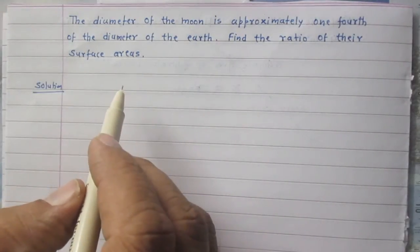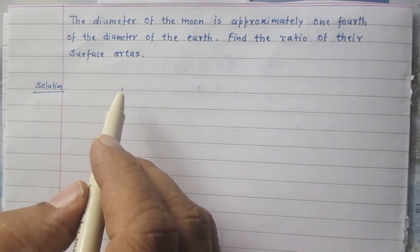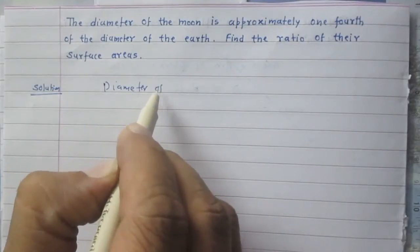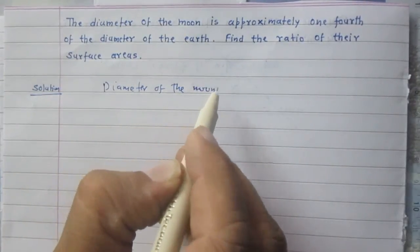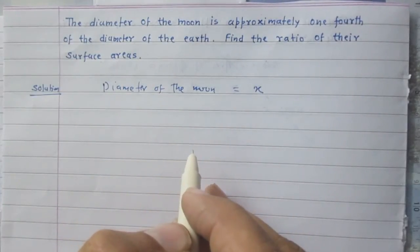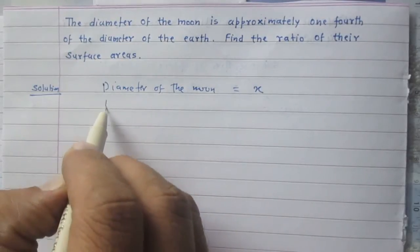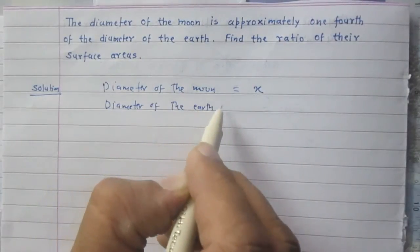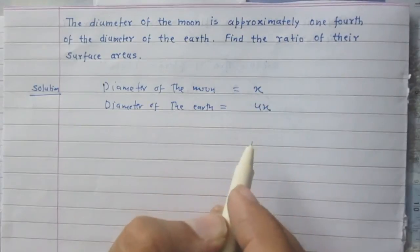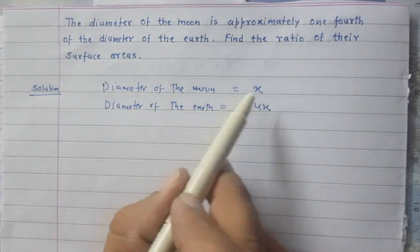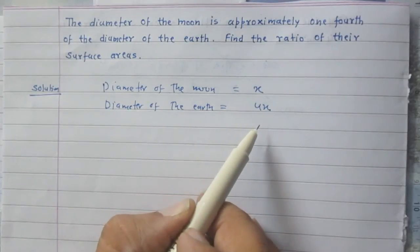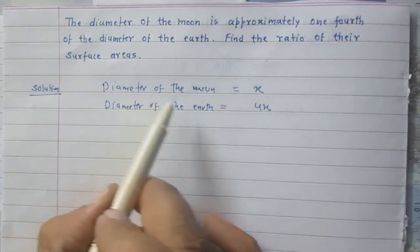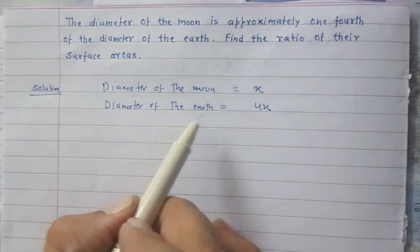The smaller diameter is of the moon. So let us consider the diameter of the moon is x units. According to the question, the diameter of the earth will be 4x, because the diameter of the moon is one-fourth of the diameter of the earth. So the diameter of the earth is four times the diameter of the moon. If diameter of moon is x, then diameter of the earth will be 4x.